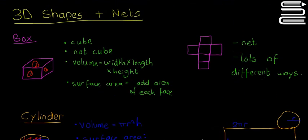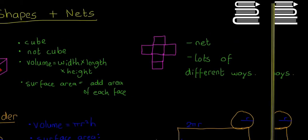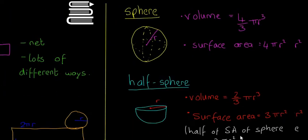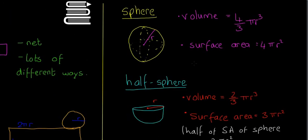The next shape is the sphere. Spheres are simple enough. The radius is the most important measurement. The volume of a sphere is 4 over 3 pi r cubed — that's in the formula book. The surface area, all the way around the sphere, is 4 pi r squared — also in the formula book.